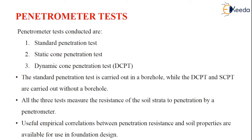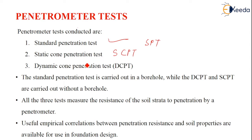Generally, penetrometer testers conducted are: Standard Penetration Test (SPT), Standard Cone Penetration Test (SCPT), and Dynamic Cone Penetration Test (DCPT). The standard penetration test is carried out in a borehole, while the other two methods are carried out without a borehole. All three testers measure the resistance of the soil strata to penetration by a penetrometer. Some useful empirical correlations between penetration resistance and soil properties are available for use in the design of foundations.